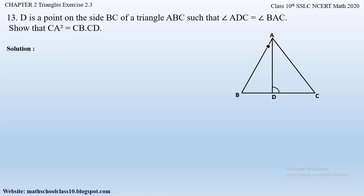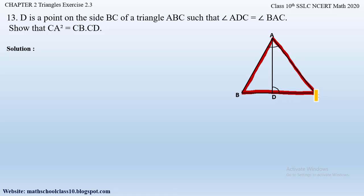Since we have to prove that CA² = CB × CD, let us use this as a hint to find the triangles to consider. They have given us three sides: CA, CB, and CD. The sides CA and CB form two sides of triangle ABC, and the sides CA and CD form two sides of triangle ADC. So we will consider triangle ABC and triangle ADC.